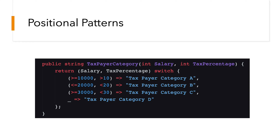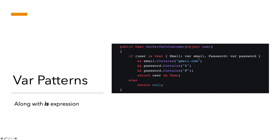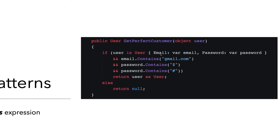Positional patterns allow you to match on multiple properties simultaneously. Here I have salary and tax percentage: if salary is greater than or equal to 10,000 and tax percentage is greater than 10 then taxpayer category A; if salary is less than or equal to 20,000 and tax percentage is less than 20 then taxpayer category B. This is a hypothetical example, but you can see how positional patterns avoid writing many separate if conditions.